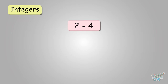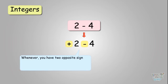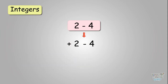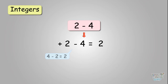Take two minus four — you can read it as positive two minus four, because two is positive. Whenever you have two opposite signs together, you do subtraction, and the result gets the sign of the bigger number. You cannot subtract four from two, but you can subtract two from four to get two. Two gets the sign of the bigger number, which is negative four, so the answer is negative two.